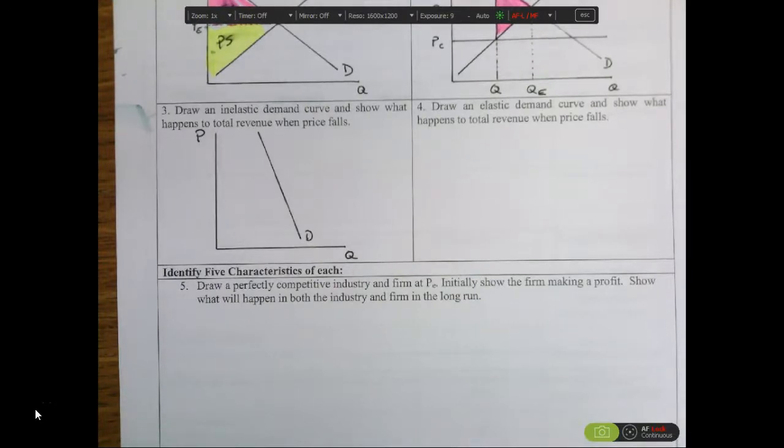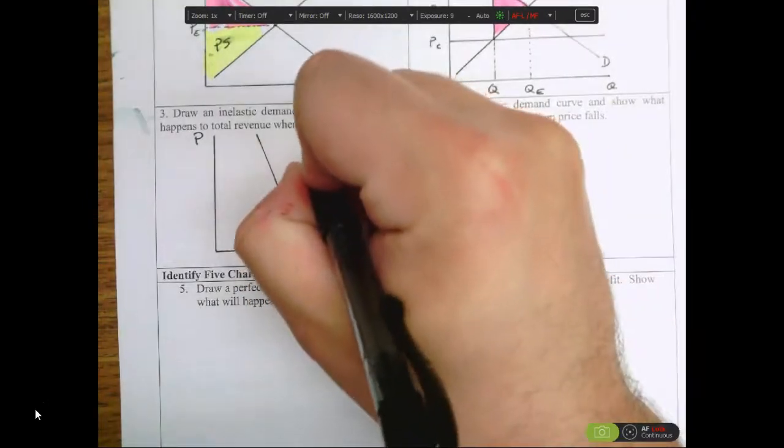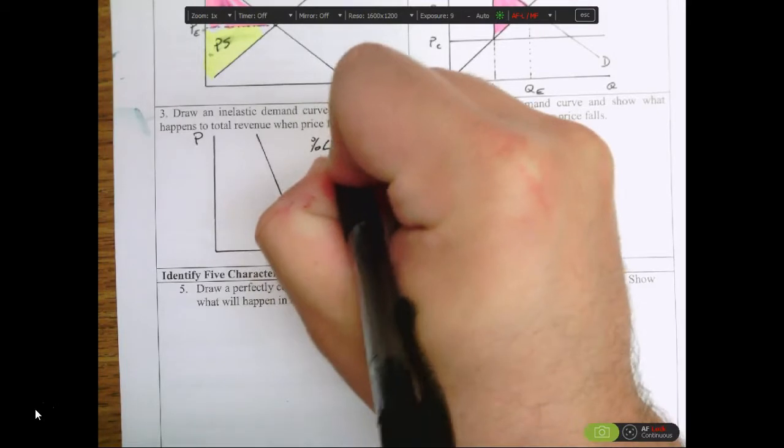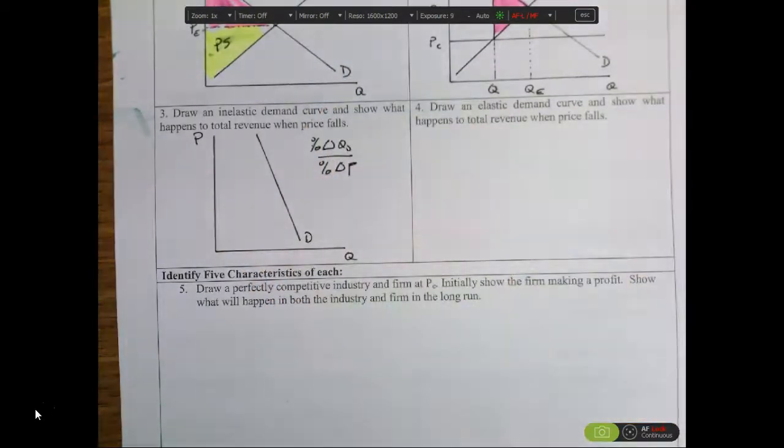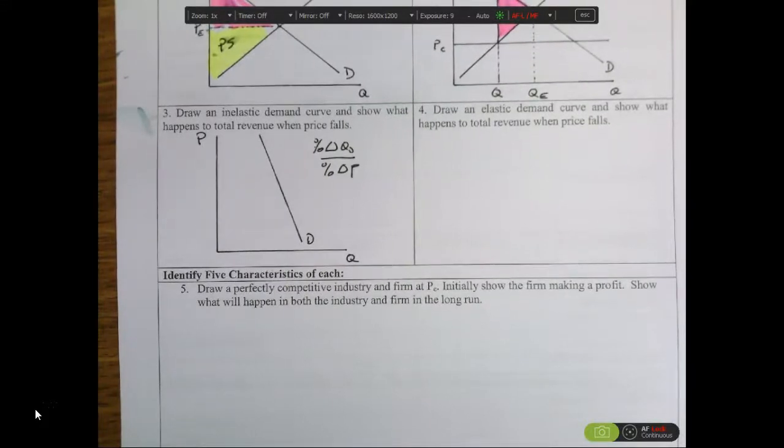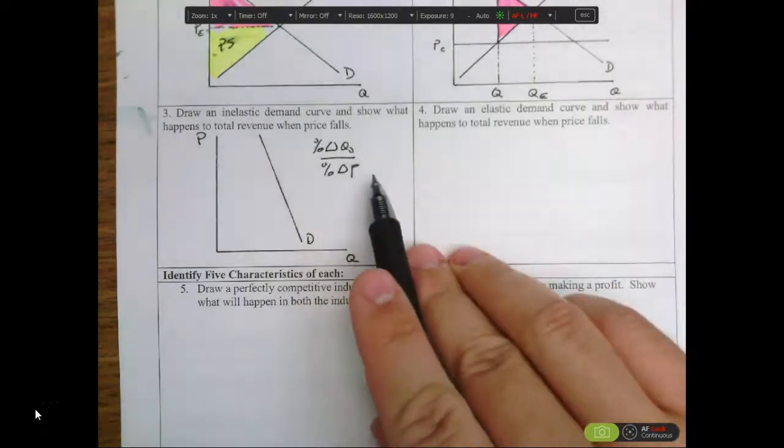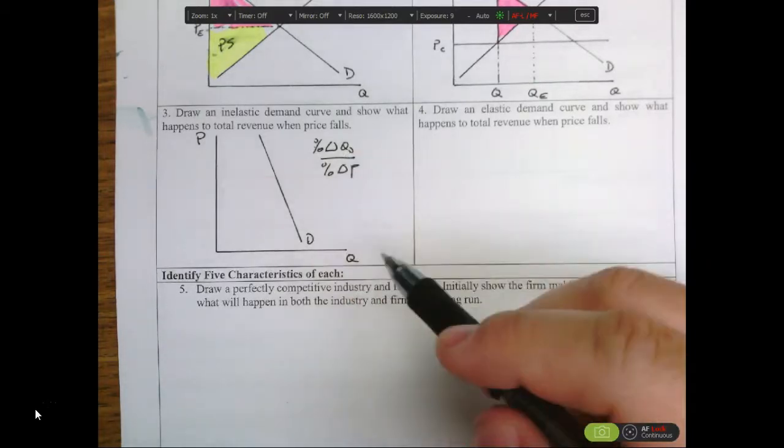When it talks about what happens to total revenue, we have to keep in mind what elasticity is about. We know that elasticity is the percent change in quantity demanded over the percent change in price. Inelastic curves occur when the quantity demanded doesn't change much with a change in price, so price may go up or down and that would affect quantity demanded.